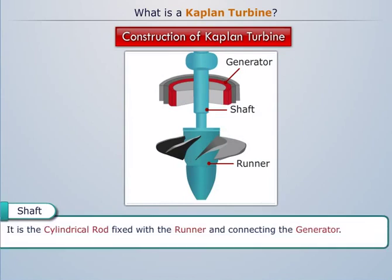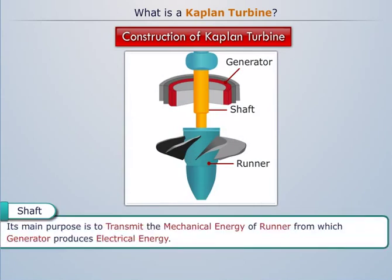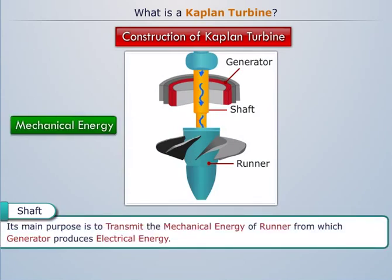Shaft: The shaft is a cylindrical rod fixed with the runner and connecting the generator. Its main purpose is to transmit the mechanical energy of the runner, from which the generator produces electrical energy.